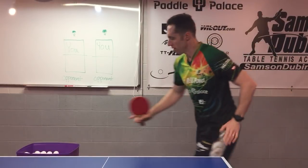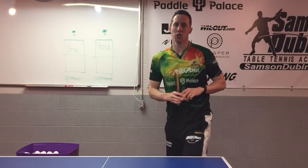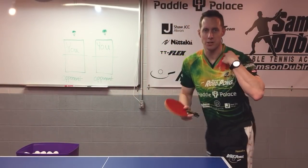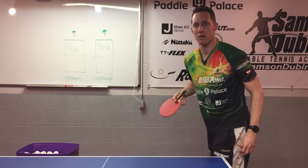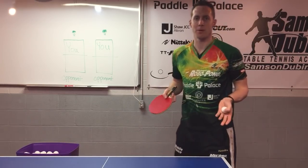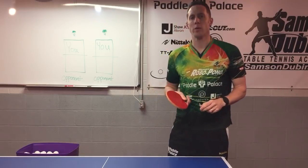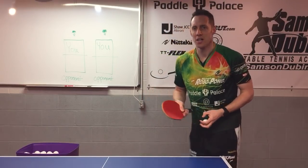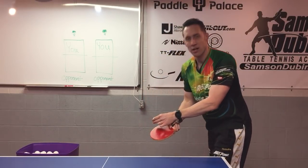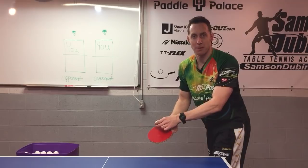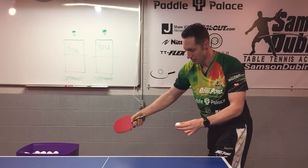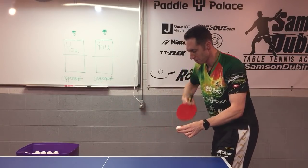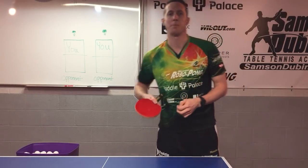Let me demonstrate. Imagine I was serving the forehand pendulum serve and I did this motion — what spin would it be? Backspin, sidespin, or topspin? Well, it depends at which point in the motion I hit the ball. If I hit the ball going forward, that would be backspin. If I hit the ball going sideways, that would be sidespin. And if I hit the ball as I'm pulling back this way, that would be topspin.